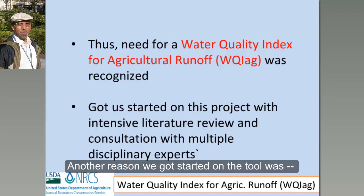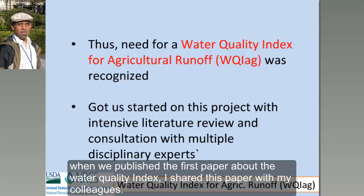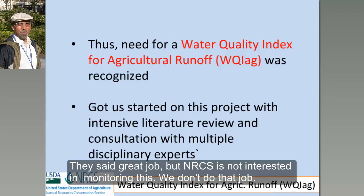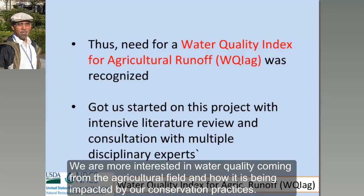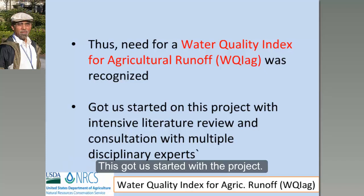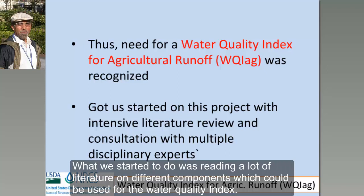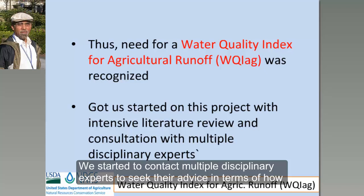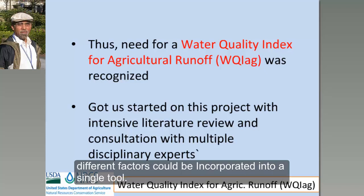Another reason we got started on this tool was that when we published our first review paper on Water Quality Index and shared it with NRCS colleagues, they said it was great work, but NRCS is not interested in monitoring water resource quality at rivers or streams — that's not our job. We are more interested in water quality coming out of agricultural fields and how it's being impacted by our conservation practices. That got us started on the project, reviewing a lot of literature on different components that could be constituted into a Water Quality Index for Agriculture Runoff, and contacting multidisciplinary experts to seek their advice on how different factors could be ranked and incorporated into a single tool.